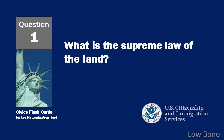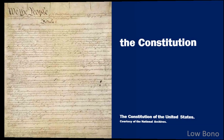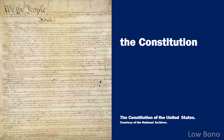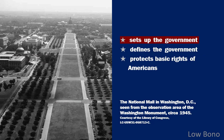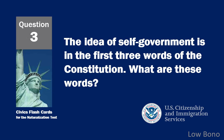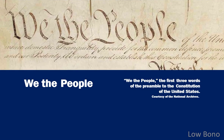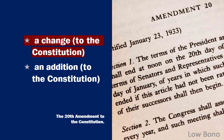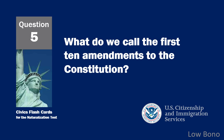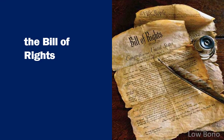What is the supreme law of the land? The Constitution. What does the Constitution do? Sets up the government. The idea of self-government is in the first three words of the Constitution. What are these words? We the people. What is an amendment? A change to the Constitution. What do we call the first 10 amendments to the Constitution? The Bill of Rights.